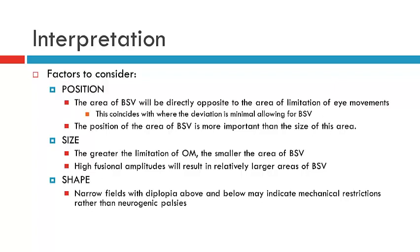In terms of size, this is going to give us information regarding how limited the eye movements are and how much of an impact it's having on the area of BSV. Generally speaking, if you have a patient who has strong fusional amplitudes, they may be able to overcome smaller amounts of deviation, so you will have these patients having a greater area of BSV than other patients. In terms of shape, this gives some indication of whether we're looking at a neurogenic or a mechanical restriction. In a neurogenic palsy, the area of BSV generally corresponds to the opposite direction of the affected muscle. In mechanical restrictions, on the other hand, you end up with narrow fields and you see the diplopia affecting a range of positions, such as the entire range of elevation or the entire range of depression.